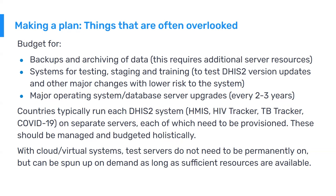You need to budget for major operating system upgrades and database version updates, which typically happen every two to three years. Countries typically run each DHIS2 system - an HMIS, an HIV tracker, TB tracker, COVID-19 surveillance or vaccination system - on separate servers. It's much easier to manage when broken down, but each needs to be provisioned and budgeted for. Testing, staging, and training systems don't need to be on all the time - they may only be used for perhaps one month a year - so there's some flexibility.